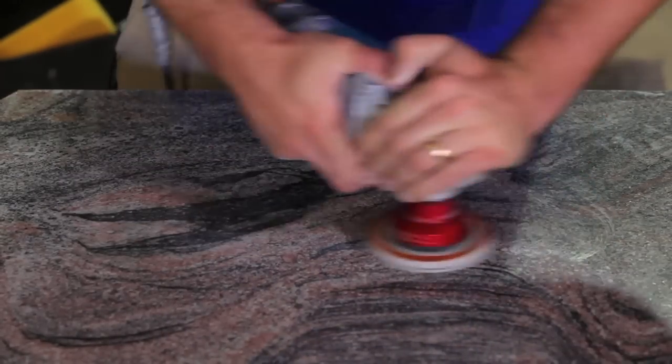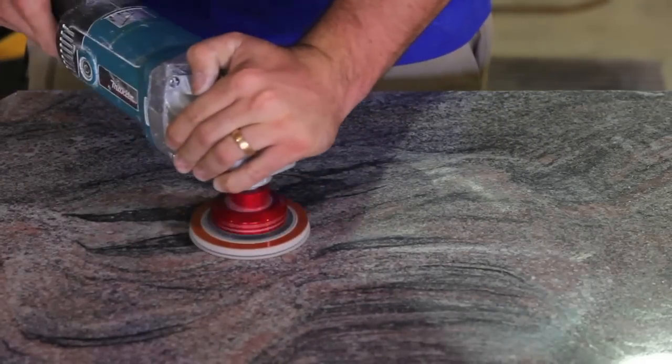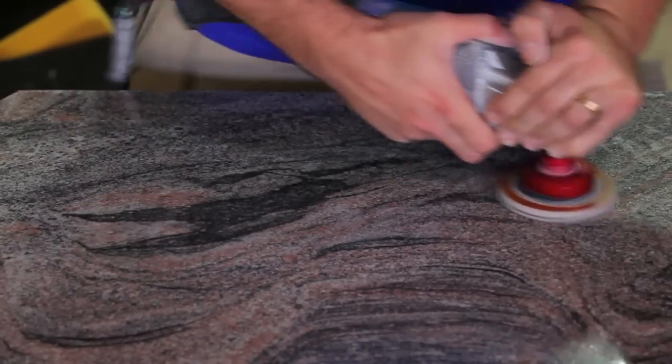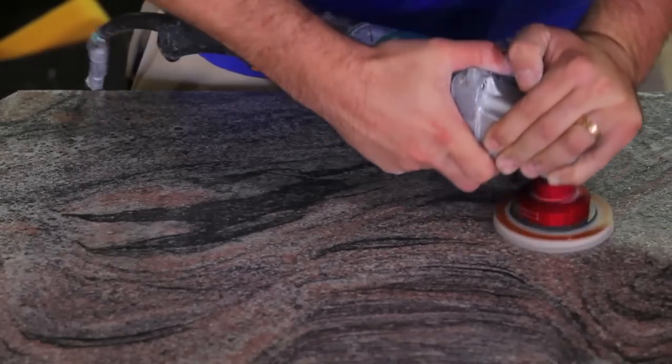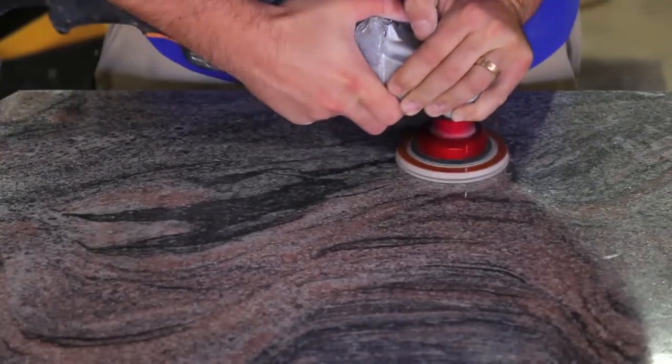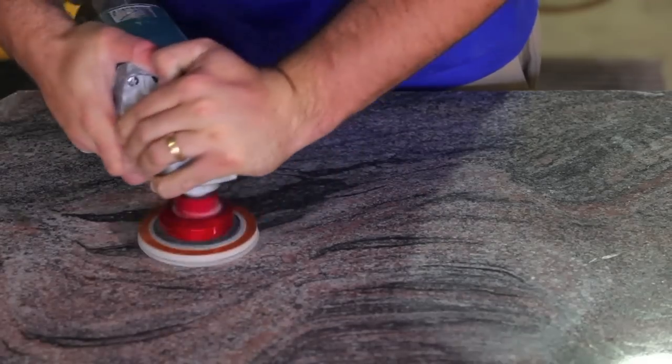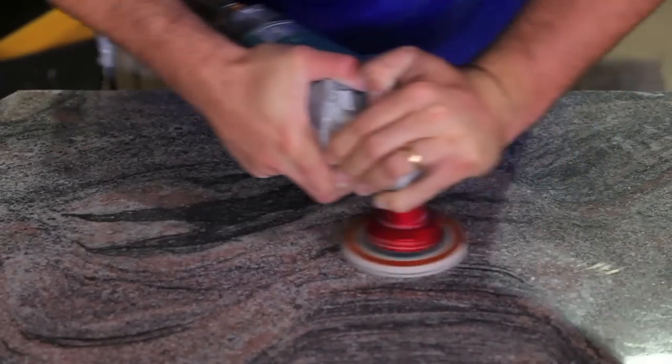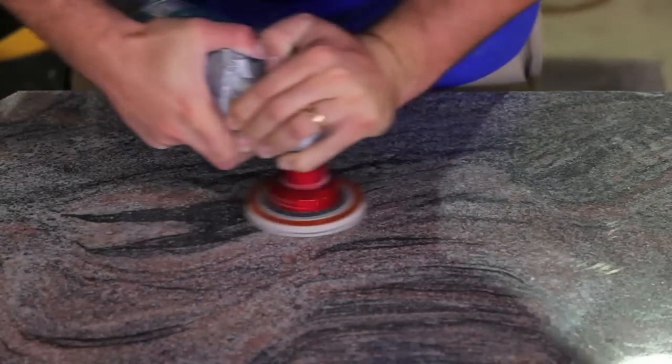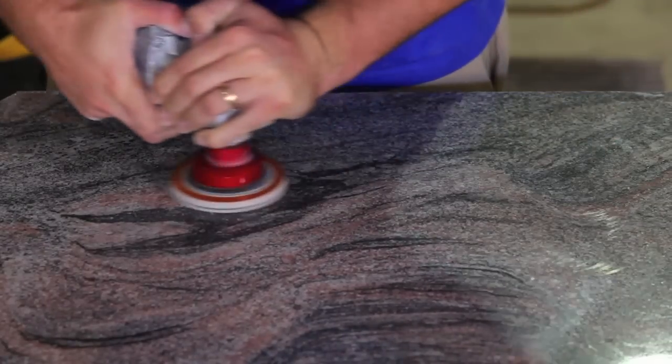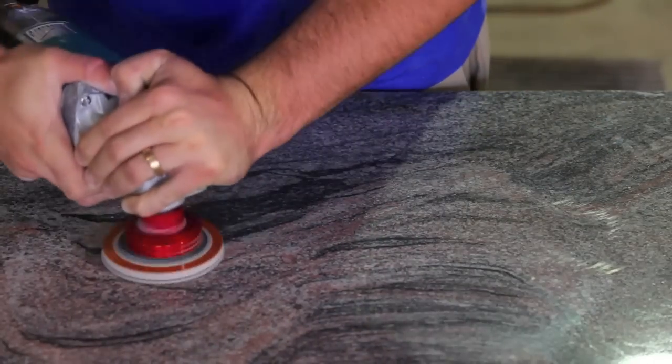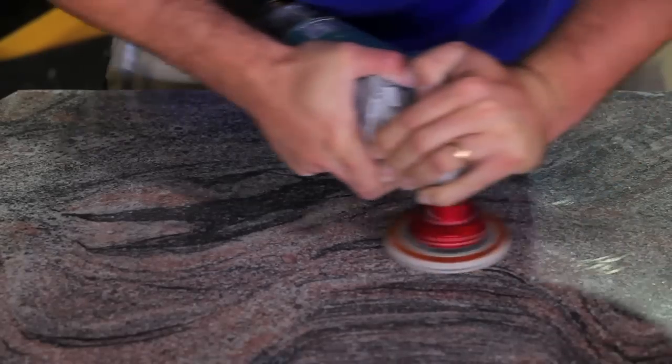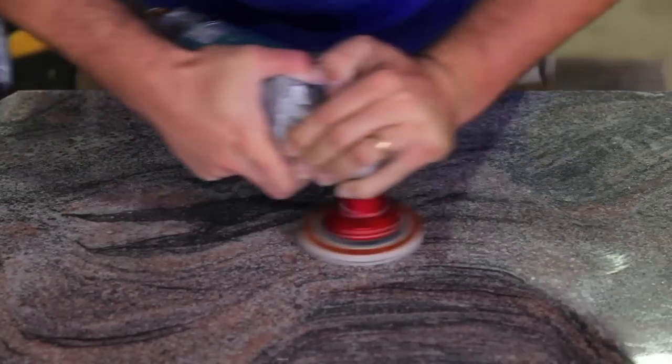You will know you are done when the whole area looks the same and there is no distinguishing outline from the area that you have previously worked on. It should blend in with the rest of the countertop and not have a distinct outline. Check the surface temperature frequently to make sure it is not too hot to touch. If it is too hot to touch it is too hot to polish. You must let it cool so that it is warm or lukewarm.